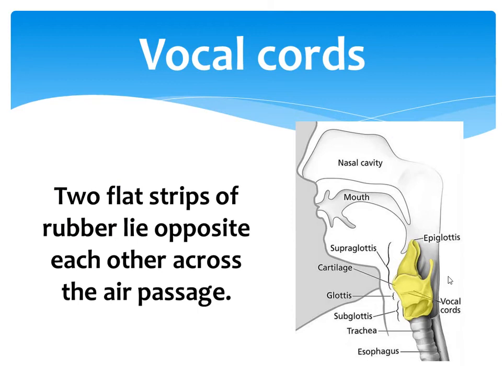You can see here the yellow cartilage which includes the strips of the vocal cords. The vocal cords alone are not enough for the production of speech sounds.